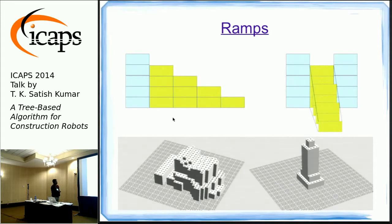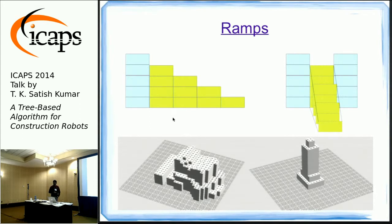For two towers next to each other with a gap, you could construct ramps individually and deconstruct them, but you can also share a ramp—a much better approach. The question becomes: can we construct much more arbitrary structures, like models of the Empire State Building or Disney Hall, and cast these as planning problems to find optimal or cost-effective solutions?